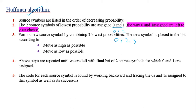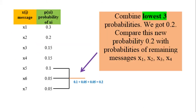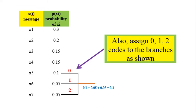Source symbols are listed in decreasing order of probability — this is the first step. The 'move as high as possible' rule will be understood when we work through the example. The next step is to combine the lowest 3 probabilities. We take the sum of the 3 messages having the lowest probability. After combining these probabilities, we get 0.2. We also assign 0, 1, 2 to the branches.